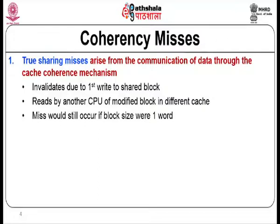If one processor modifies the data available in its cache, what happens to the same block replicated in other processors? They will have different information — that is the coherence problem. We defined the coherence problem in the earlier module and also looked at the snoop-based protocol used for handling the cache coherence issue.